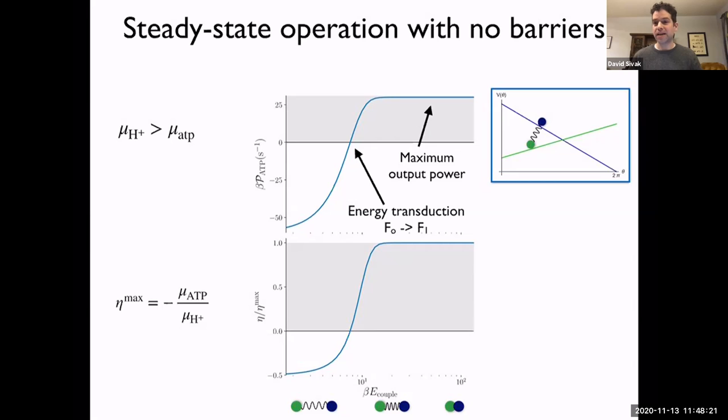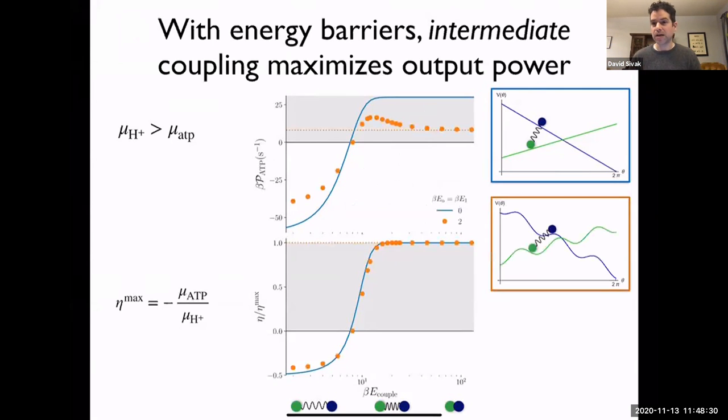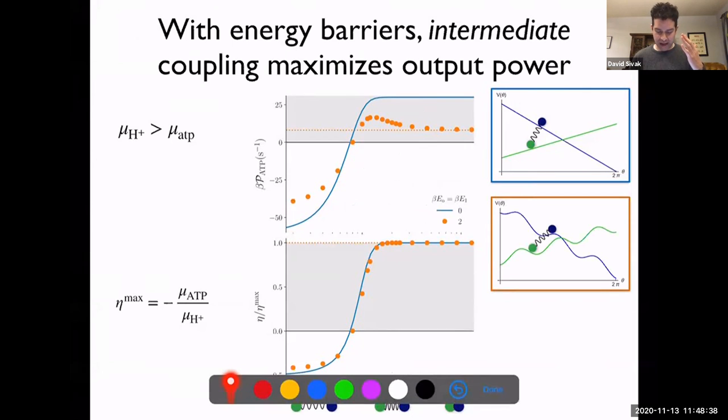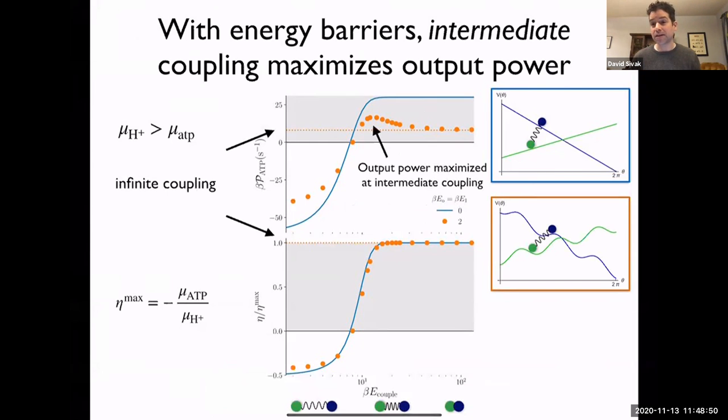When you now make this slightly more complicated, you add these energetic barriers, you now require the system to receive stochastic kicks in order to actually make progress, the picture changes a bit. The efficiency still is a monotonic function of the coupling strength. However, your output power is now no longer monotonic in the coupling strength. We can calculate exactly the infinite coupling result when the two systems move in lockstep. And what we see here is that the output power is actually maximized at an intermediate coupling strength. So if you make the coupling too large, the system actually moves slower diffusively.